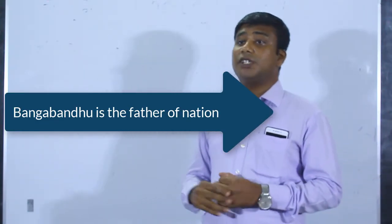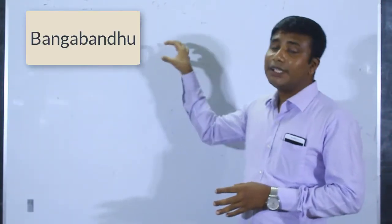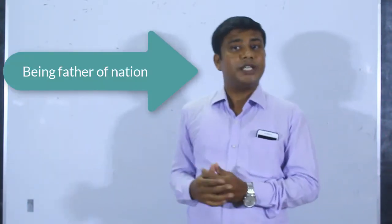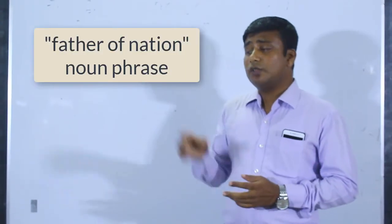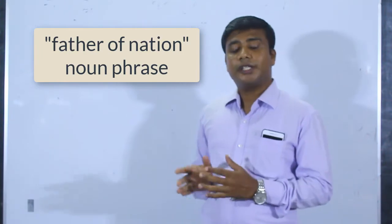Bangabandhu is the father of the nation. So 'the father of the nation' — that is the flowchart form. The second step is to turn it into the fact. The first step is to be 'father of nation.' Then double the number of frames.